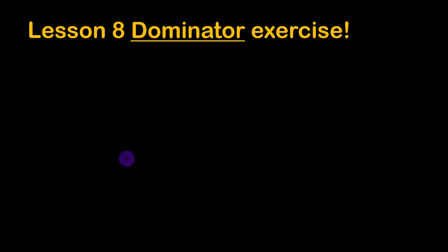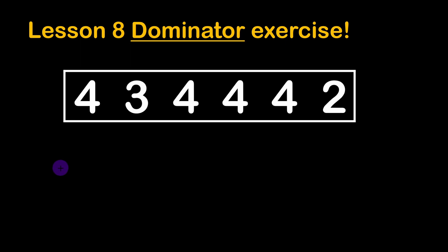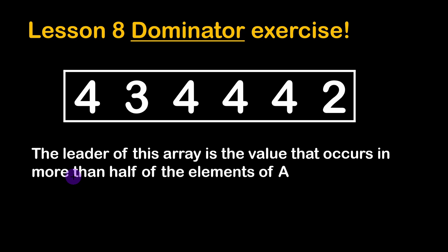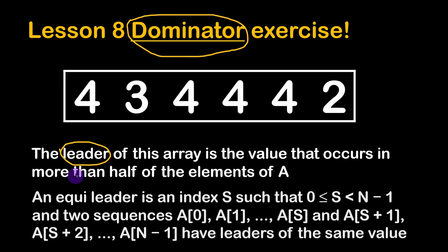We are given an array of integers and the leader of this array is the value that occurs in more than half of the elements — that's how it's described on the Codility website. For those who have already solved the first exercise of lesson eight, what we are calling 'leader' here was previously called 'dominator', so these are basically the same thing.